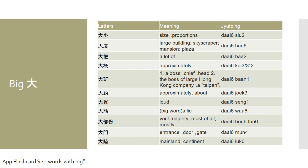Lastly, another word using the character daai is 'mainland' or 'continent' in Cantonese, which we pronounce daai luog, daai luog. In Cantonese, daai luog usually refers to mainland China, but by definition daai luog actually means 'great continent' or simply 'continent' in Cantonese.